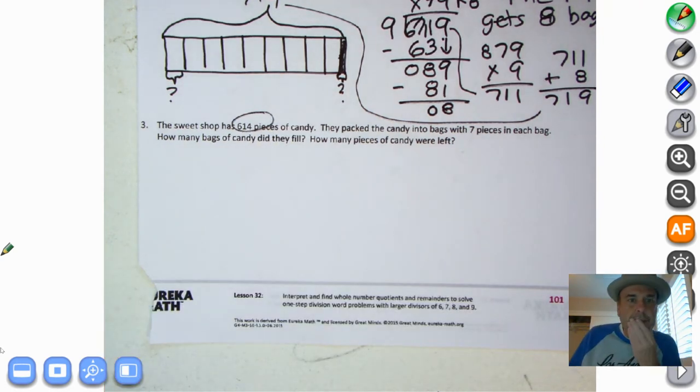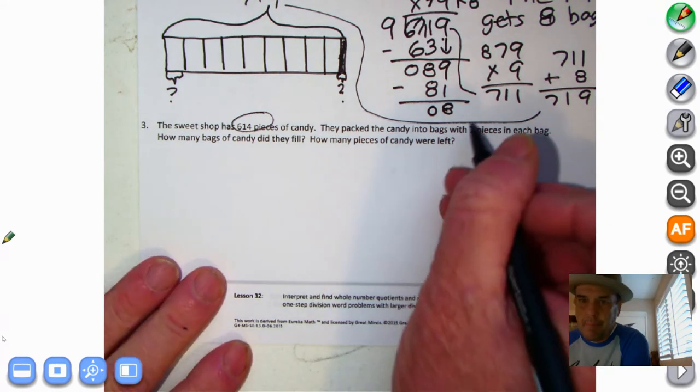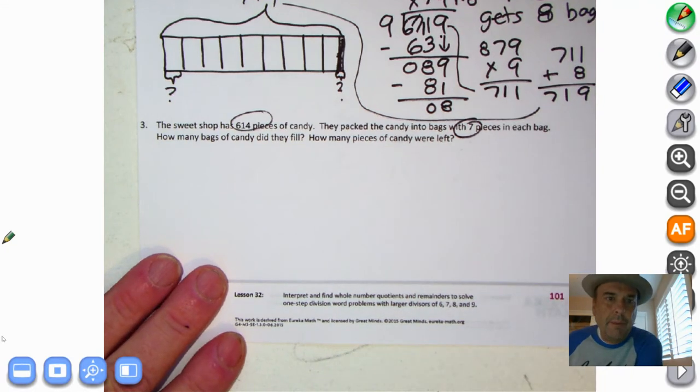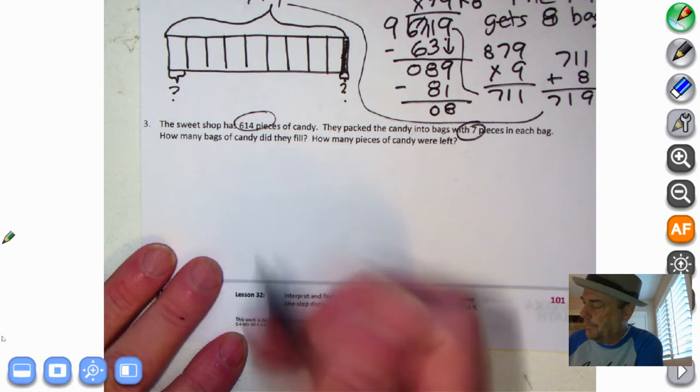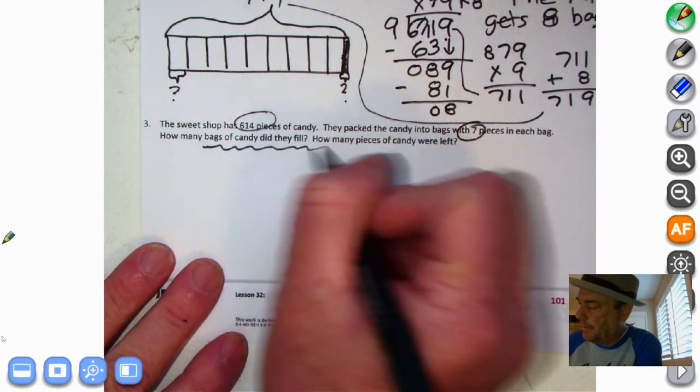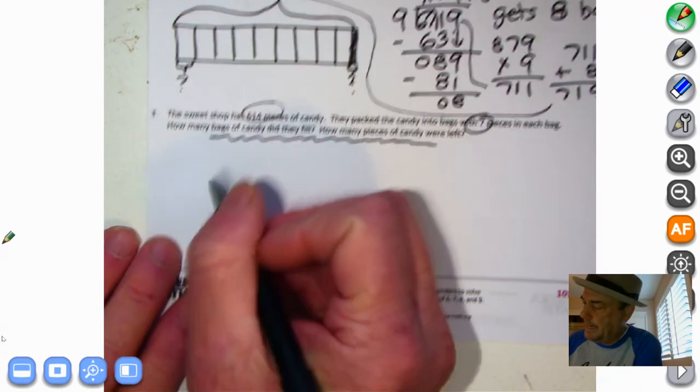The Sweet Shop has 614 pounds of candy. They packed the candy into bags with seven pieces in each bag. How many bags of candy did they fill? That's a lot. How many pieces of candy were left over? So we know we're going to have a remainder. That's all we've got to figure out right here. So let's make our tape diagram.